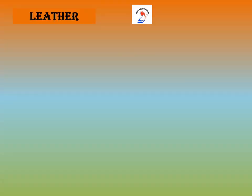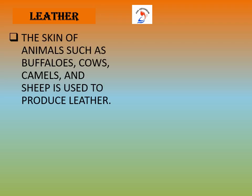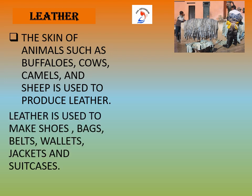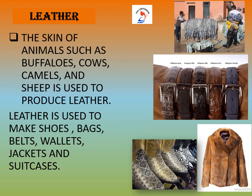Now we will learn about leather. The skin of animals such as buffaloes, cows, camels and sheep is used to produce leather. When animals like cow, goat and sheep die, their skin is removed and leather is made from it. The skin is first treated with chemicals such as tannin, and later processed and polished to make leather. Leather is used to make shoes, bags, belts, jackets and suitcases.